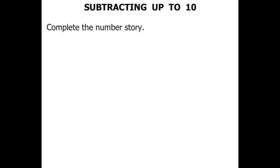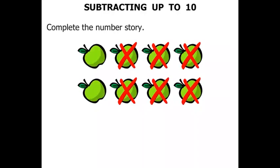Complete the number story. Now we have got some apples there but some of them have been crossed out. And then we have got something, take away something, leaves something.